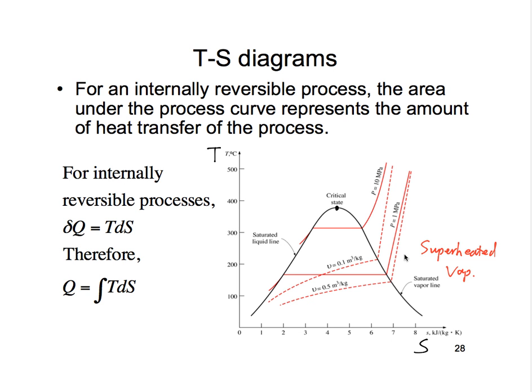For example, if you compress a saturated vapor, you start from somewhere on the saturated vapor line and go vertically upwards. After compression, this will give you superheated vapor.